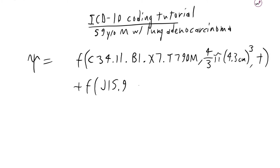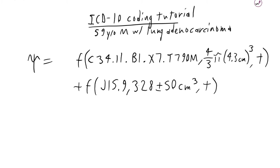I was able to get the radiologist to estimate the size of this pneumonia from the imaging. He gave me 328 plus or minus 50 centimeters cubed. And then again, we'll have our time variable. Now this pneumonia is treated empirically, so we are going to need to make this an imaginary sum. I'll add i, which of course is the square root of negative 1, to that sum.